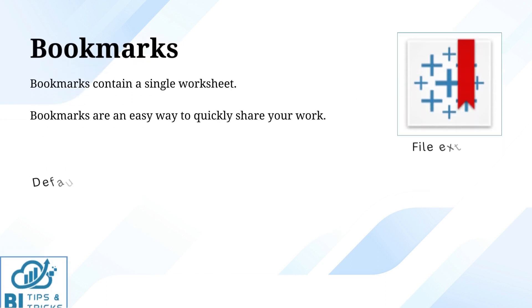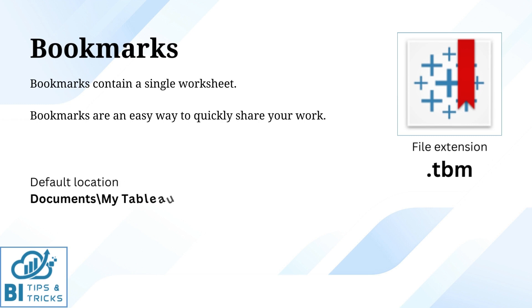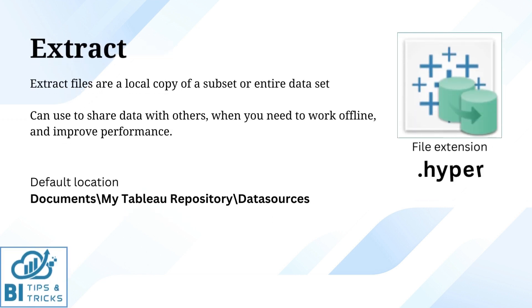The next file type is Tableau Bookmark. Tableau Bookmark files have the .tbm file extension. Bookmarks contain a single worksheet and are an easy way to quickly share your work. The next file type is Extract. Tableau Extract files have the .hyper extension. Extract files are a local copy of a subset or entire data set that you can use to share data with others when you need to work offline and improve performance.